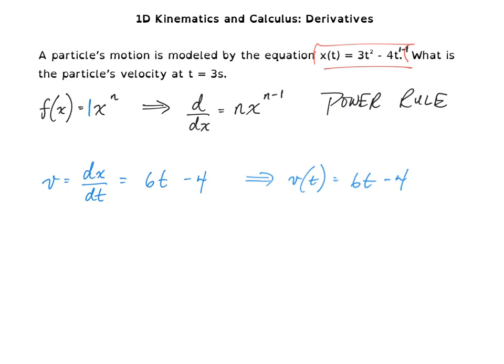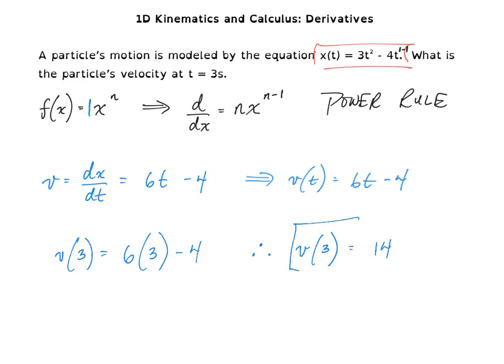I could give you any time value and you could find the instantaneous velocity, but we were given t = 3 seconds. All we have to do is plug in 3 for our time. Therefore, the instantaneous velocity at 3 seconds equals 14. I'm not going to attach units because they were not defined in this problem.